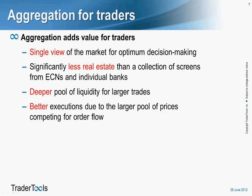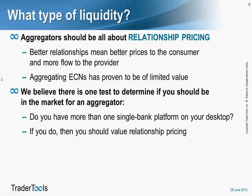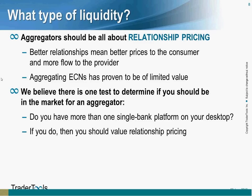When talking about an aggregation platform for a trading desk, one of the first questions is what type of liquidity should you put in. There are two main types: ECN liquidity and single bank-based liquidity. ECN-based liquidity may be suitable for some applications where the buy side wants to maintain anonymity, or for algo engines. But for trader-based trading, where the trader maintains good relationships with market makers, in our experience single bank liquidity is ideal.